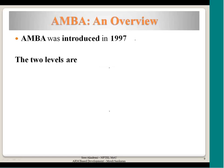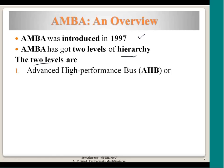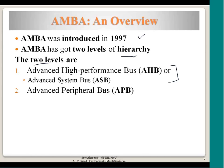The AMBA specification was introduced in 1997. AMBA has two levels of hierarchy: the Advanced High-performance Bus (AHB) and the Advanced Peripheral Bus (APB). AMBA is a multi-microcontroller bus architecture under which different bus standards exist. Either AHB or ASB will be in a system along with APB. APB is for low-power, low-performance peripherals to be connected.